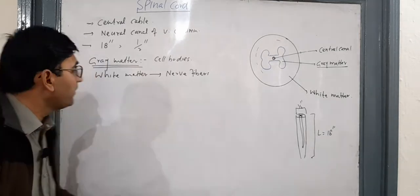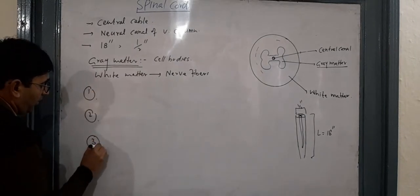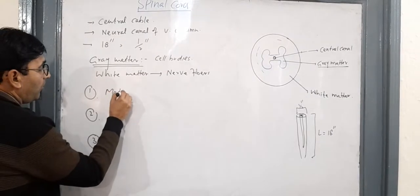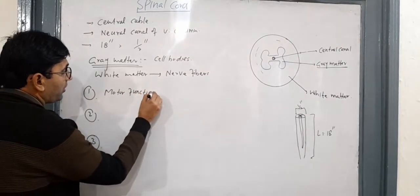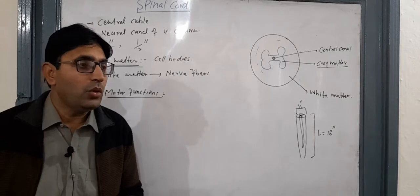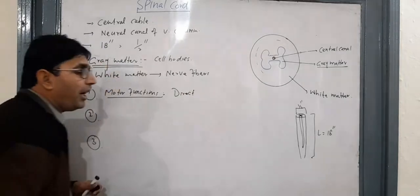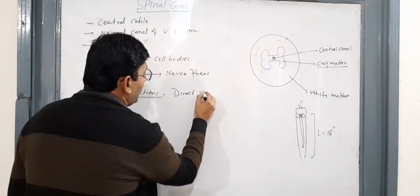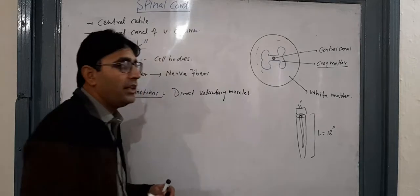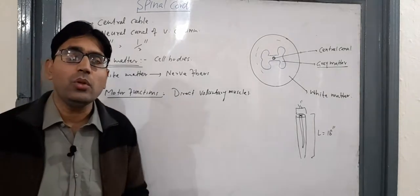The spinal cord has three major functions. The first is motor functions — it directs voluntary muscles to perform movements, meaning it controls voluntary muscle movements.